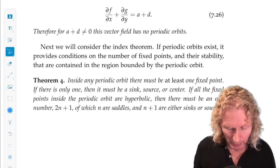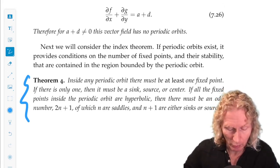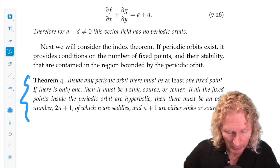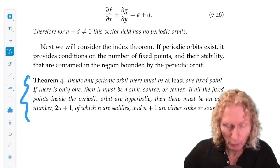So in particular, inside any periodic orbit there must be at least one fixed point. If there is only one, it must be a sink, source, or center.